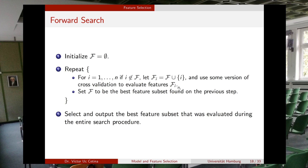Once you've evaluated, you set F to be the best feature subset generated. Then you run the step again by adding a new feature to the current F. For example, if feature one was best in the first run, in the second run F contains feature one, and you create all sets containing feature one plus feature two, feature one plus feature three, and so on. In the end, you output the best feature subset found during the entire search.